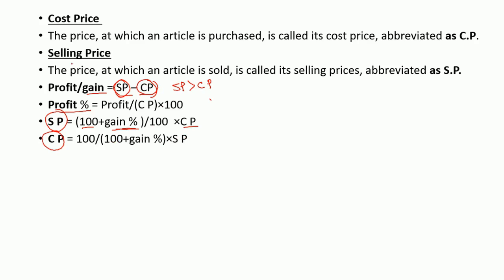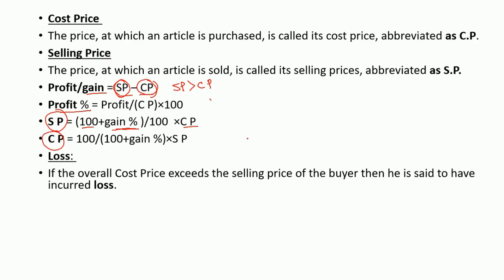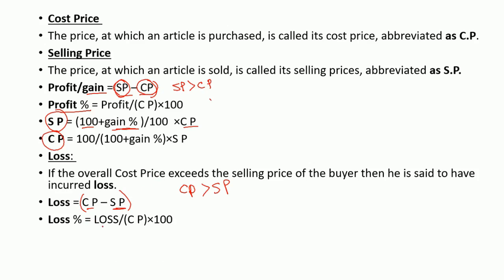The second part of this calculation is loss. Loss is when the overall cost price is more than the selling price. Loss is represented as cost price minus the selling price — that is how you get the number that is loss. If you want to calculate the percent loss, you use a similar formula: loss divided by the cost price, into 100. Simply, loss divided by cost price, into 100, will give you the value in percentage loss.